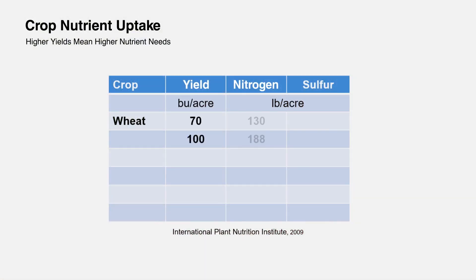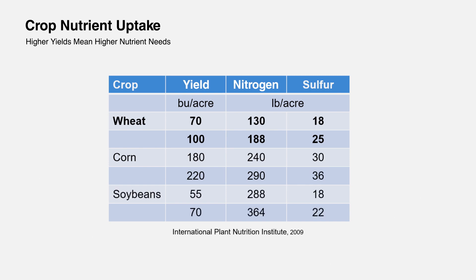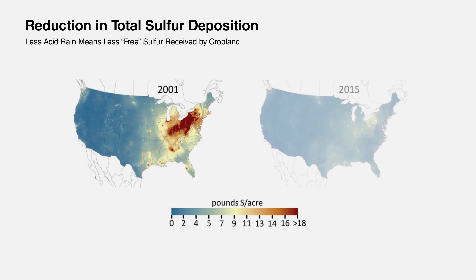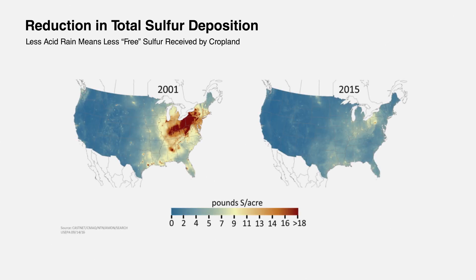For instance, 100 bushel per acre wheat needs 188 pounds of nitrogen per acre to be taken up in that plant, and 25 pounds of sulfur per acre. A lot of people don't realize that as systems have changed so much in just 20 or 30 years — from maybe in the mid-Atlantic going from 20 pounds per acre of sulfur deposition to basically zero now. Basically all of the sulfur you needed used to be applied via rainfall. Now it's not.